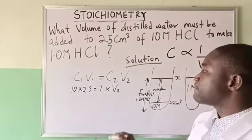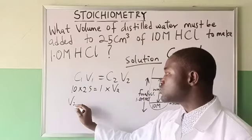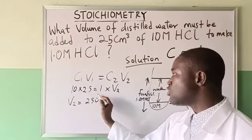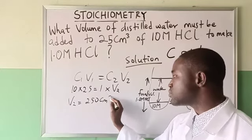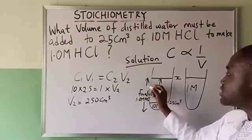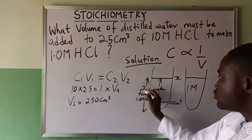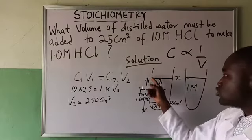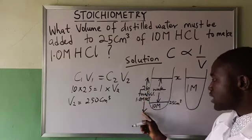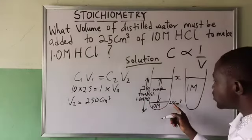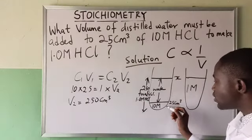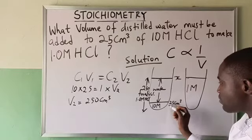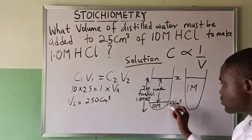Then it gives us that V2 will be equal to 10 times 25, all over 1, which equals 250 cm³. That means this is from here to here, 250 cm³. 250 cm³ is from here to here.